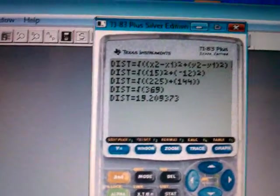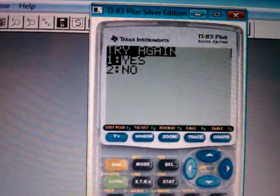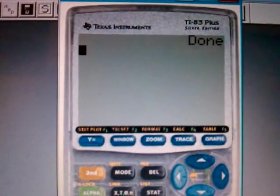And you hit enter, and you actually want to try again if yes. If you hit yes, it will go back through. If you hit no, it will just click out of it. That's the code for the distance program.